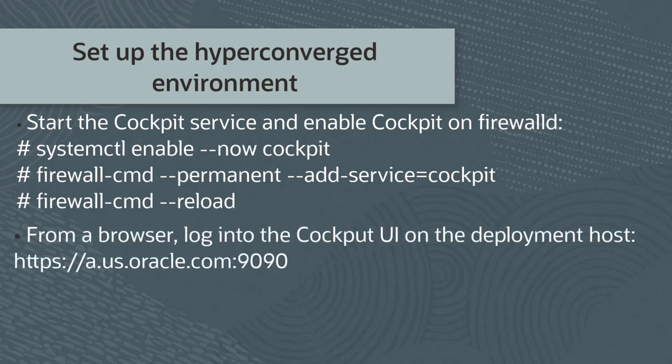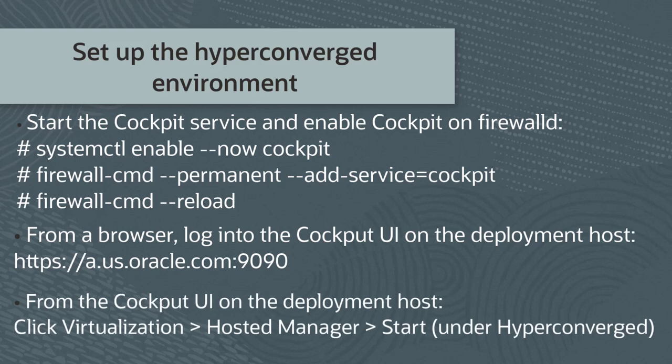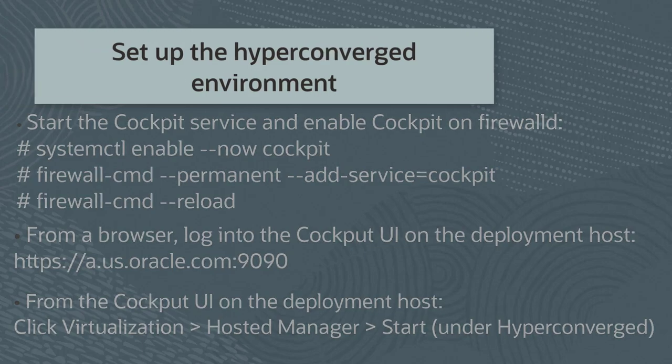From a web browser, log in to the cockpit management interface of your Oracle Linux 7 deployment host at port 9090. In this demonstration, host a.us.oracle.com is our deployment host. From the cockpit UI on the deployment host, start the deployment wizard by clicking Virtualization, then Hosted Manager, then click the Start button under Hyper-Converged. We'll now begin the demonstration portion of this video.